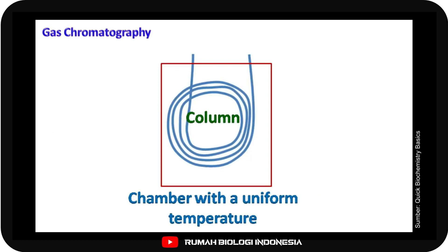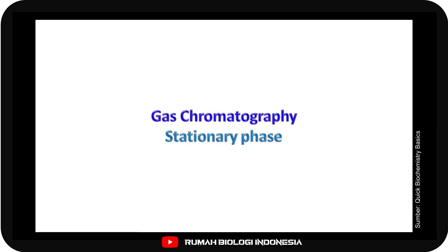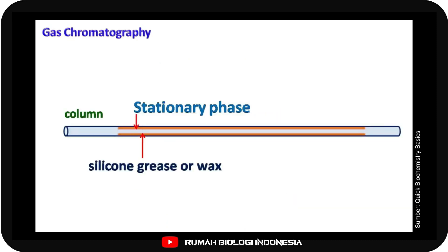The column is placed in a chamber so that a uniform temperature can be maintained. The stationary phase is packed in the inner wall of the column. The stationary phase is made up of silicone grease or wax which can withstand high temperature.